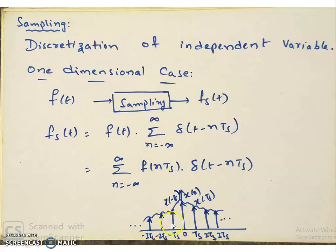F of t at the values 0, ts, 2ts, 3ts, minus ts, minus 2ts, minus 3ts — so on till minus infinite and till positive infinite — is taken, and we call that the sampled signal Fs of t. We are sampling the signal at uniform intervals, so this is called uniform sampling.